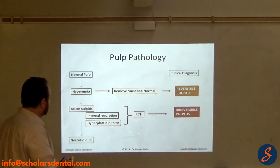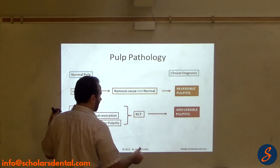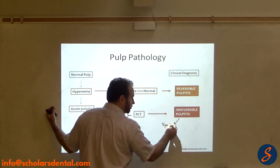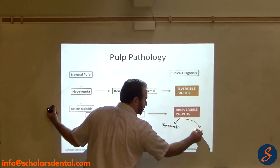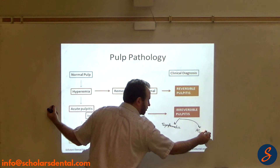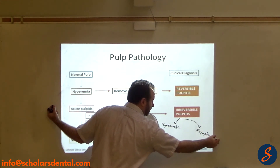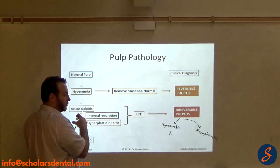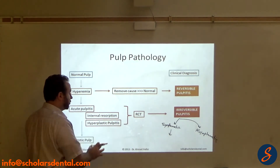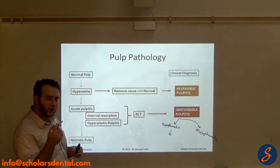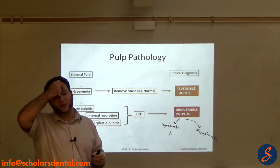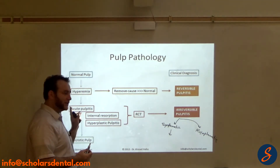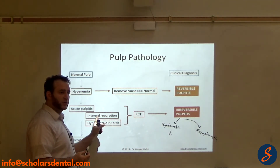Now, some books — mainly most books — will tell you irreversible pulpitis is symptomatic and asymptomatic. Under symptomatic you have acute pulpitis because it's painful, and under asymptomatic you have internal resorption and hyperplastic pulpitis. So that's another way of looking at those two, because you're going to say irreversible pulpitis is usually painful, but the symptomatic type is acute pulpitis clinically, and the asymptomatic types are those two, which are less painful.